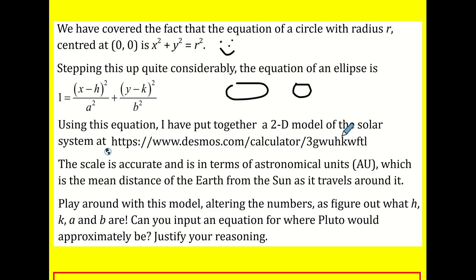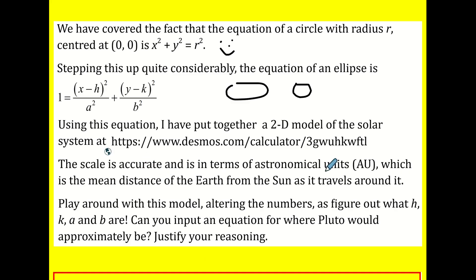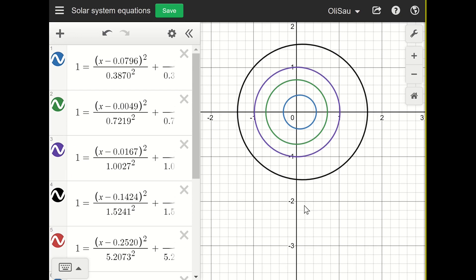I've taken this equation and I put it together in a 2D model of the solar system. This can be found at this web link and it looks like this. What I'd like you to do is, well, the scale is accurate. It's in terms of astronomical units. Instead of measuring in centimetres or kilometres, because the Earth is so far away from the Sun, we define a new scale. One astronomical unit is the mean distance of the Earth from the Sun. It's hundreds of thousands of kilometres. But rather than writing that, we'll just say it was back to one because then it's more easy to compare with other planets. I want you to play around with the model, change the numbers and try and figure out what H, K and A are and think about how you might be able to fit Pluto in. You might need to do a bit of research. So have a go at this, pause the video and then I'm just going to talk about a few aspects of it.